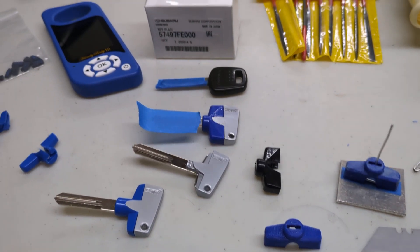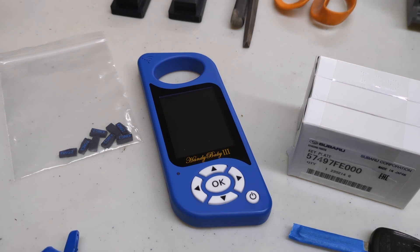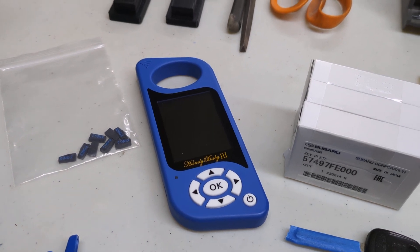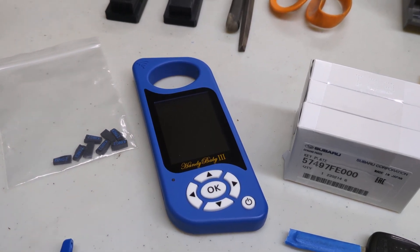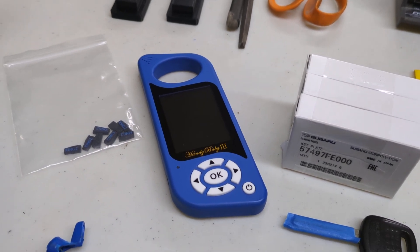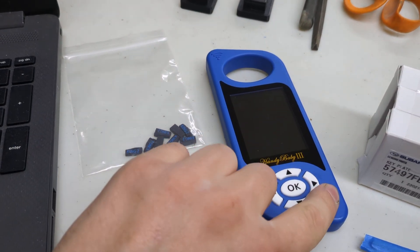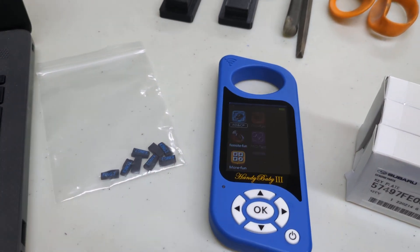Then I went ahead and I bought this Handy Baby 3 programmer. Subaru won't copy my key. I don't have the original VIN number for it. But this device from China will actually read the chip on the key, and you can buy these blank ones and then you're able to flash it. So it's pretty cool. It's about $140.